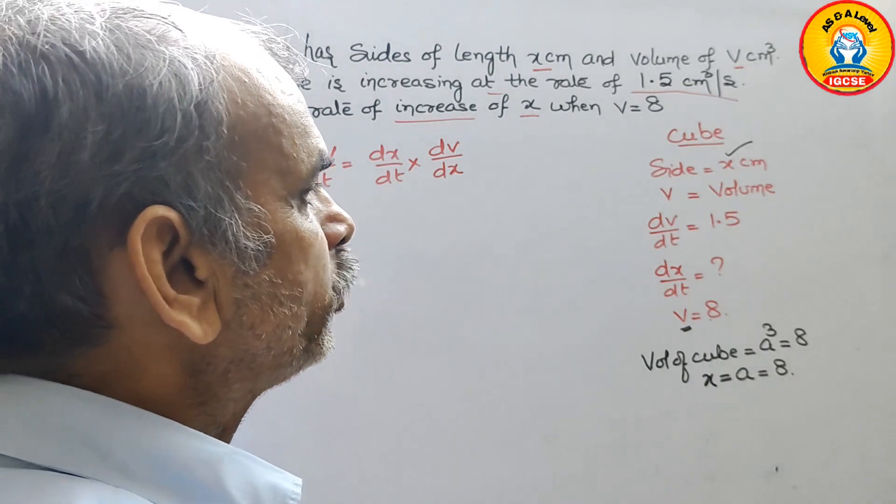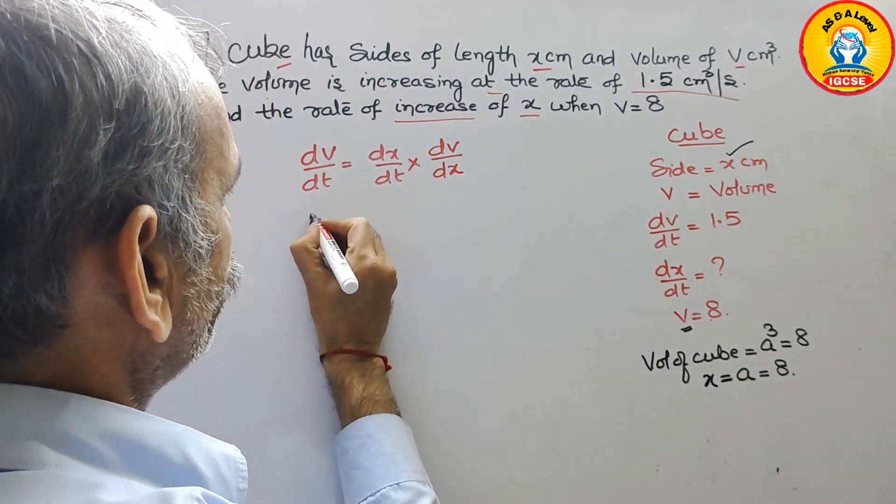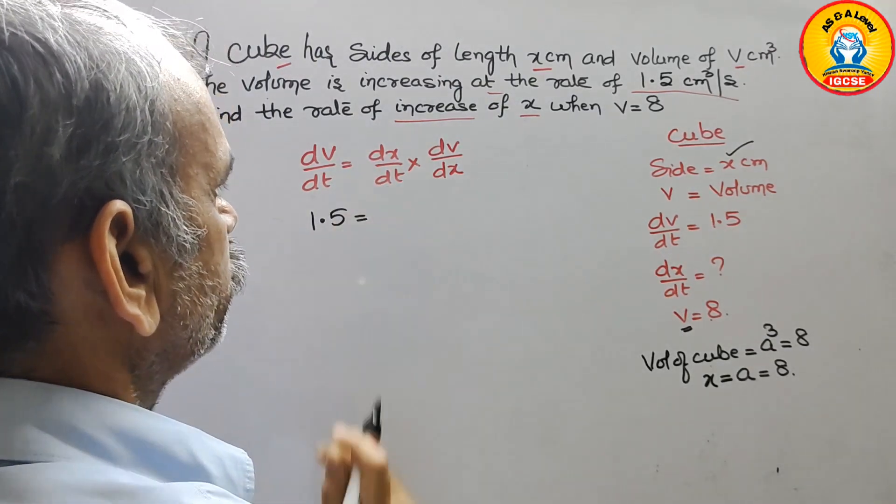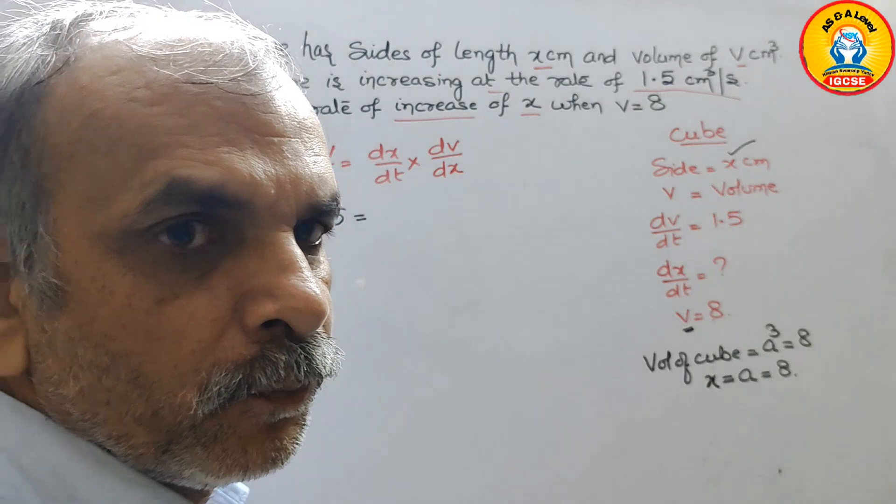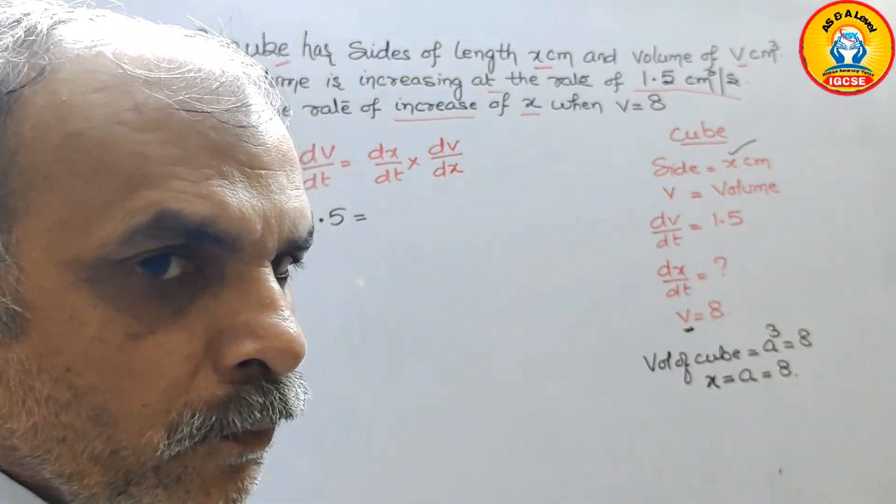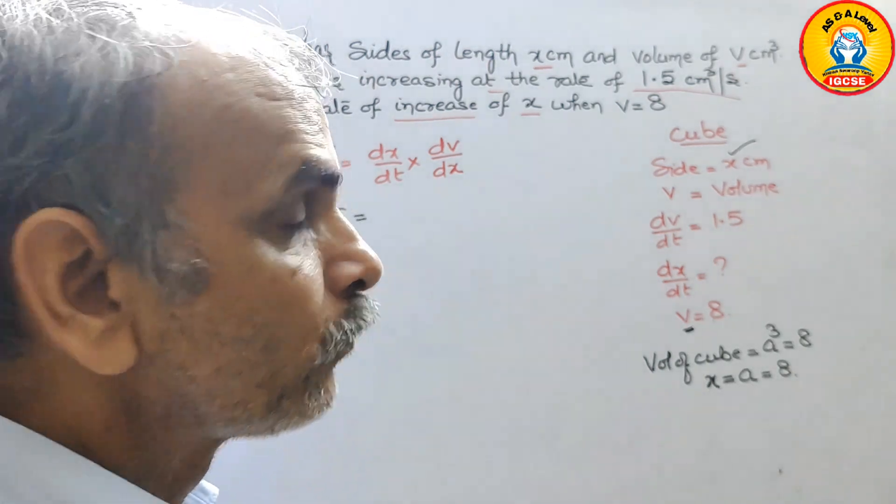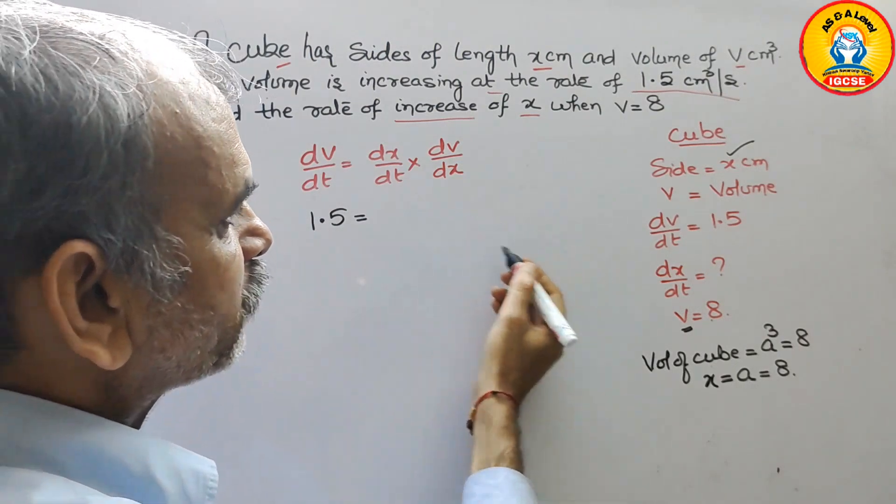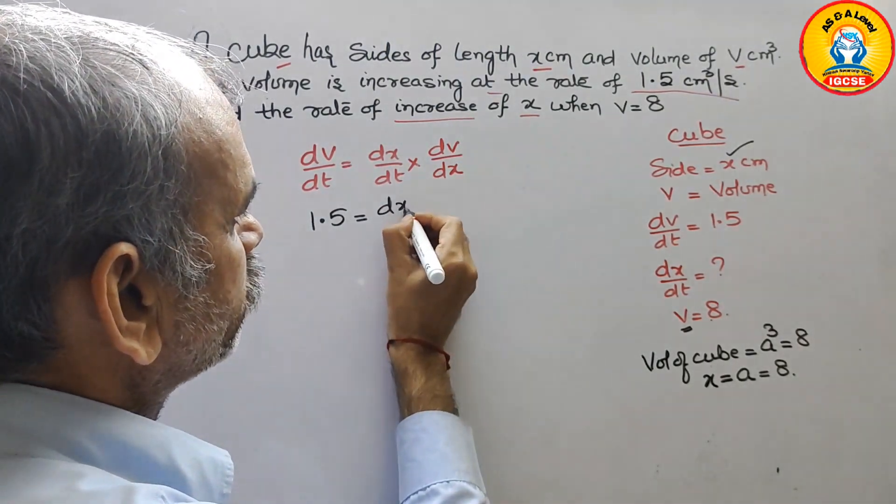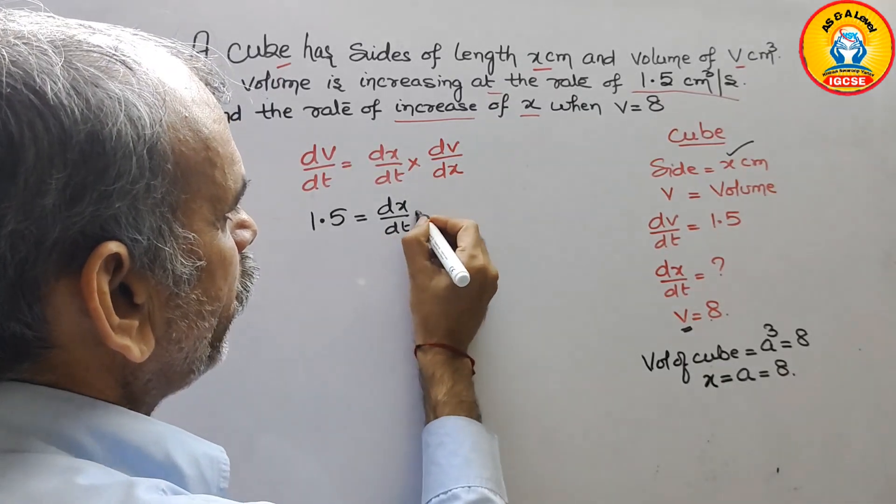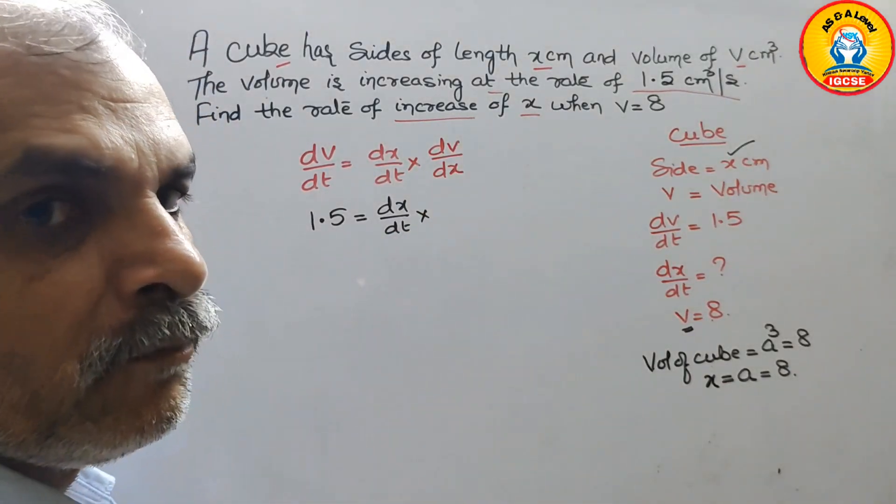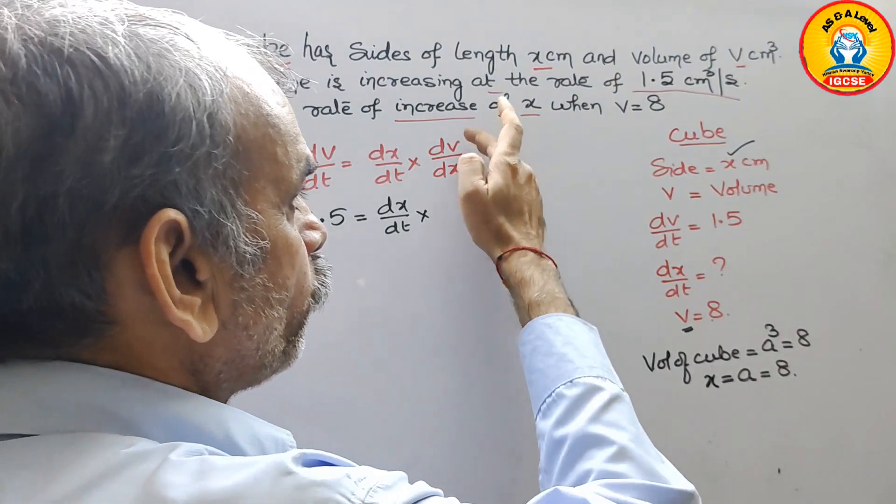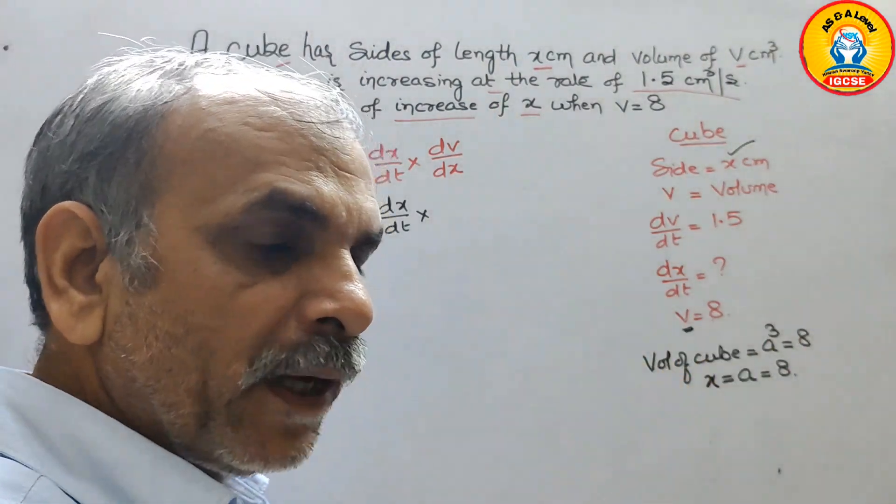Let's see what will happen. So here, dv by dt they have given 1.5 is equal to dx by dt. So dx by dt we have to find out times dv by dx. That means we have to differentiate volume with respect to x.